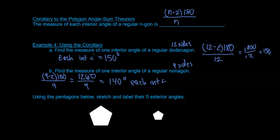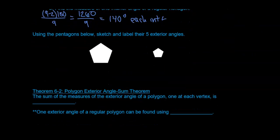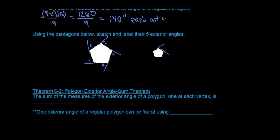Now use the pentagons below to sketch and label their five exterior angles. Exterior angles are outside the shape. We can draw all five of them — and it kind of looks like a throwing star. So we have one, two, three, four, five exterior angles.